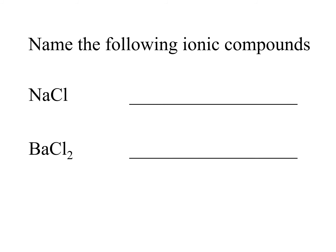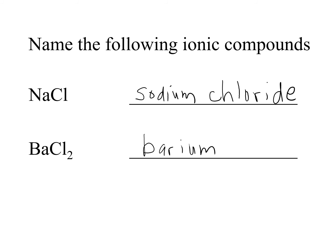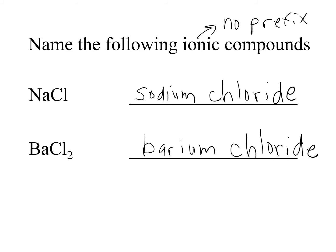For NaCl: Na is sodium, Cl is chlorine — change the ending to 'ide' — so we have sodium chloride. The next one is BaCl₂: Ba stands for barium, Cl becomes chloride, so barium chloride. Notice there are no prefixes — ionic compounds never have prefixes, only covalent compounds. This is not called barium dichloride even though there are two chlorines, because we can look at the charge ratio between ions to confirm a neutral compound.